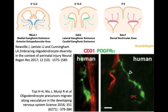During embryology, oligodendrocyte precursor cells arise and migrate in three different waves. The first wave comes from the medial ganglionic eminence, the second from the lateral ganglionic eminence, and the last wave at postpartum day zero migrates from the subventricular zone.